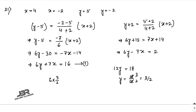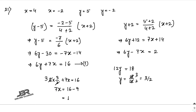Substituting y = 3/2 into equation (1): 6×(3/2) + 7x = 16, so 9 + 7x = 16, giving 7x = 7, so x = 1. The intersection point (center) is (1, 3/2). The equation of the circle is (x−1)² + (y−3/2)² = r², which you can further simplify to find the final answer.